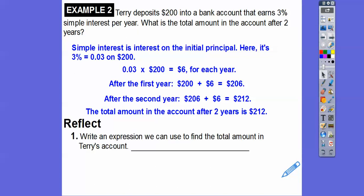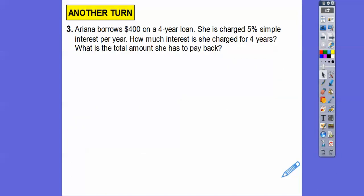So write an expression that we can use to find the total amount of Terry's account. So here it is right here. It's the initial $200 plus we're multiplying this two stands for the two years times the interest of the $200, the initial amount right there. So if we wanted to find four years, I'd just change this two to a four, but it would still be times 0.03, 3% times 200. And that's what we add to the initial deposit right there. That's what simple interest does.